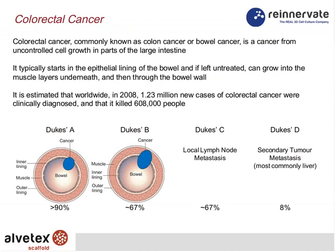Colorectal cancer — also known as colon or bowel cancer — represents uncontrolled growth of cells in the wall of the large intestine, typically starting in the epithelial lining. If left untreated it can invade tissues beneath and ultimately spread by metastasis throughout the body. It is estimated that worldwide approximately 1.2 million cases were clinically diagnosed, and in 2008 that resulted in 600,000 deaths — clearly a major area of cancer cell biology research.